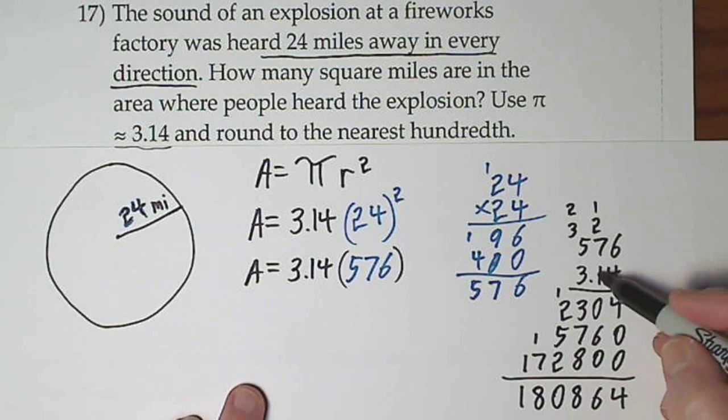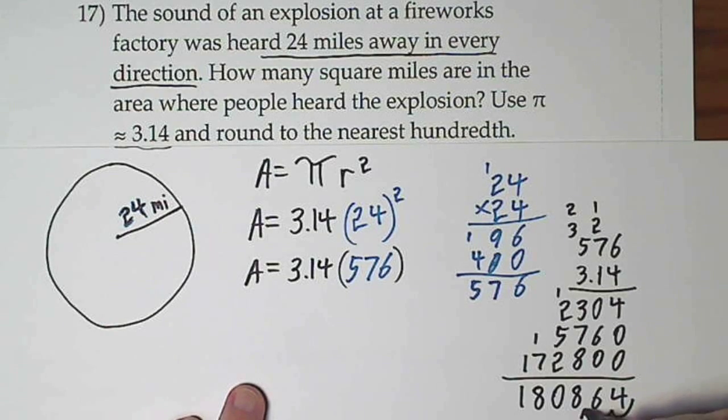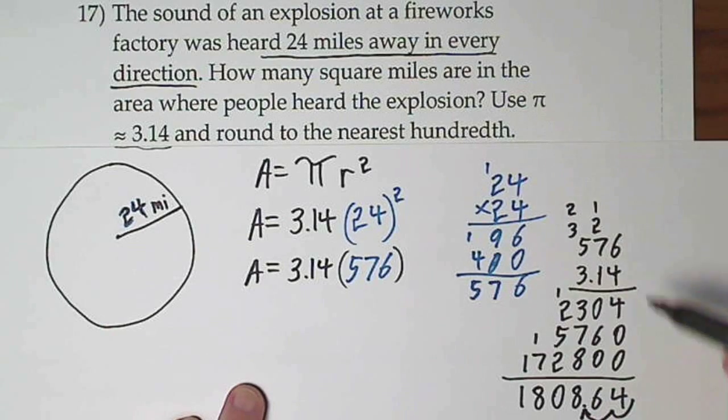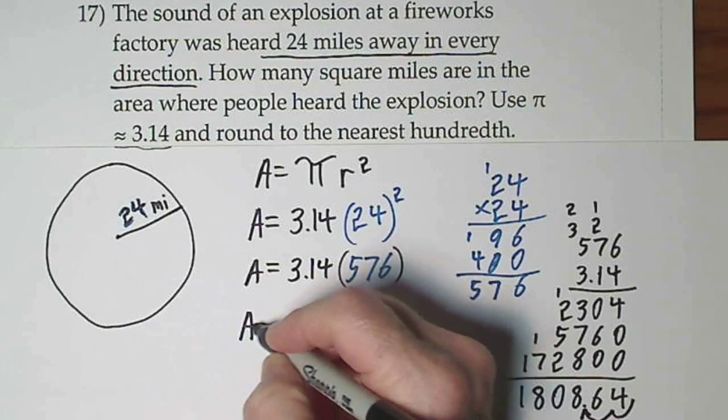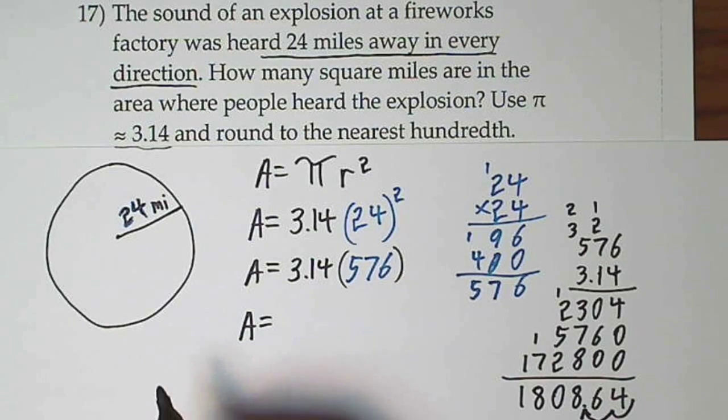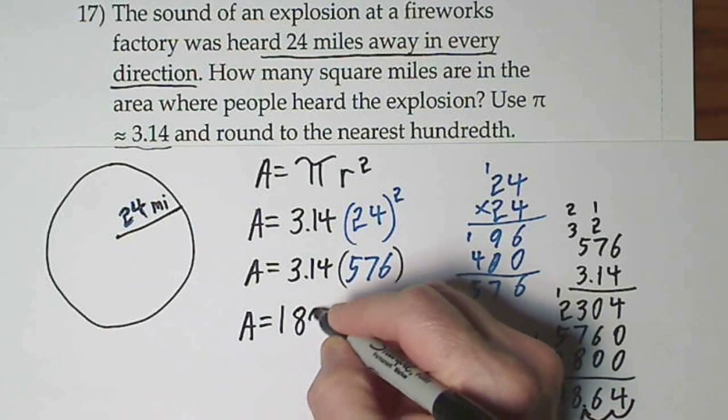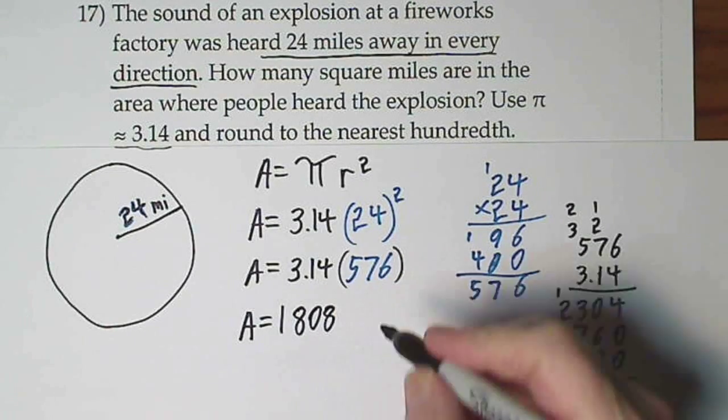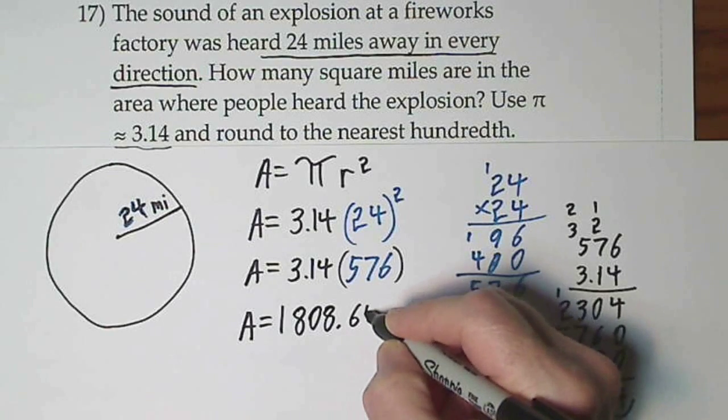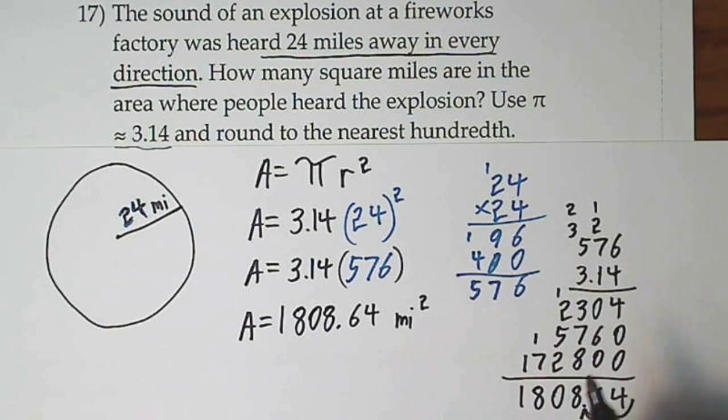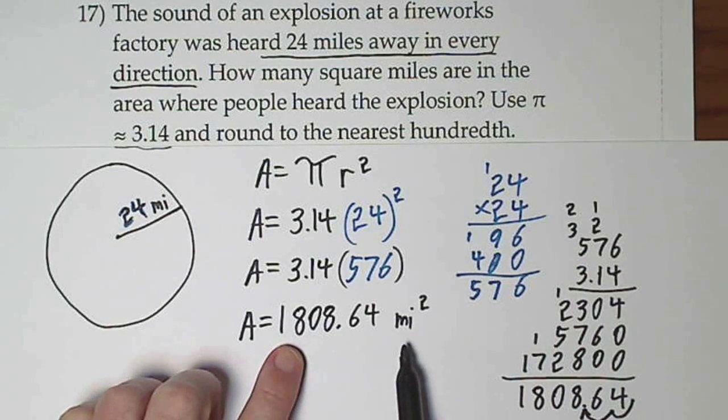And we have two decimal places, so we have to come in two decimal places. It said round to the nearest hundredth. Well, we're already in hundredths, so we'll just leave it the way it is. And it turns out that 1,808 and 64 hundredths square miles. So for almost 2,000 square miles people could hear that.